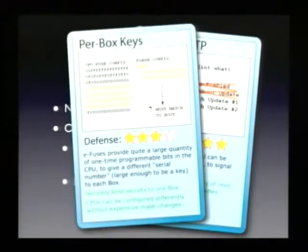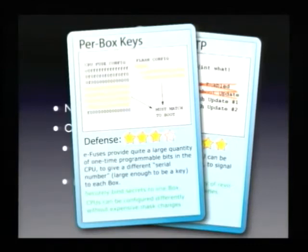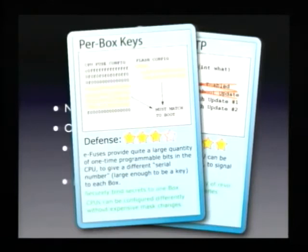They also had such a large number of one-time programmable bits that they could implement a very large random number per CPU, used as a per-CPU key. Every CPU has a different key burned in, which is used to encrypt some data. The nice thing is that key never leaves the CPU. So even if you get an Xbox from the store and have dumped the boot ROM and know all shared secrets, you still cannot decrypt some parts because the key in the CPU is different for each Xbox. It's implemented using eFuses and is 128 bits or so.